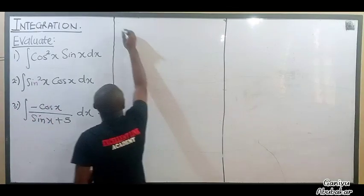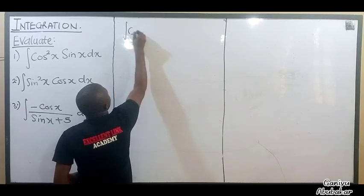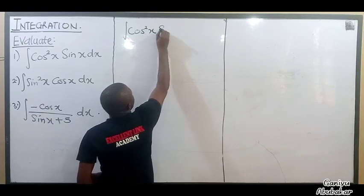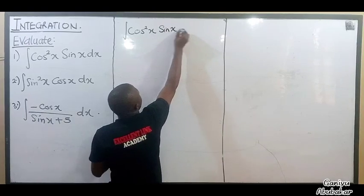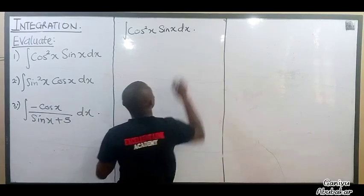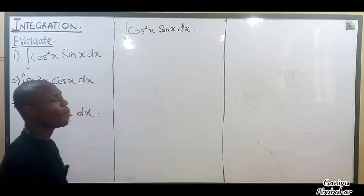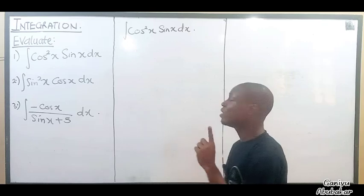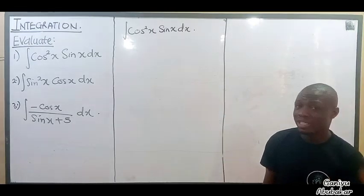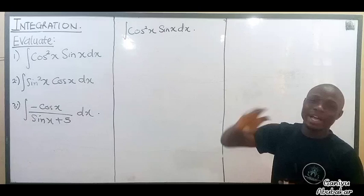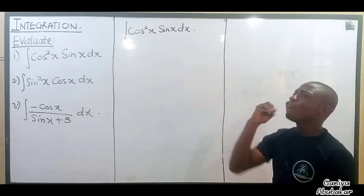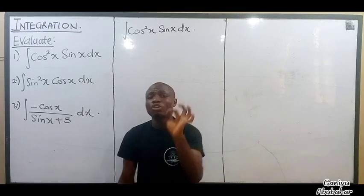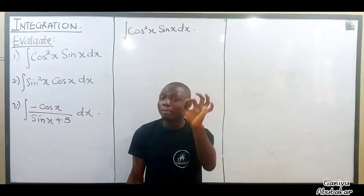I have the integral of cos squared x times sin x dx. I'm going to integrate this. For this case, I can apply a general method. The only two methods I can apply here are the substitution method and integration by parts.